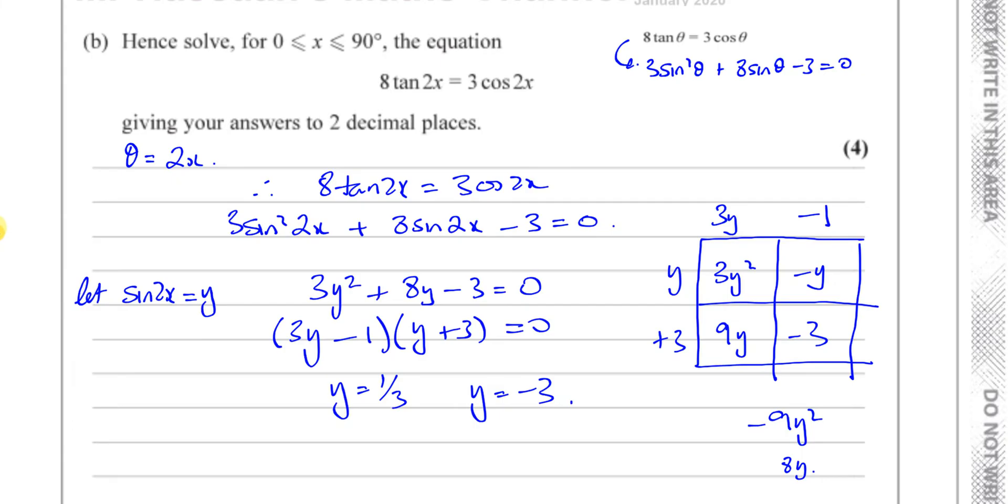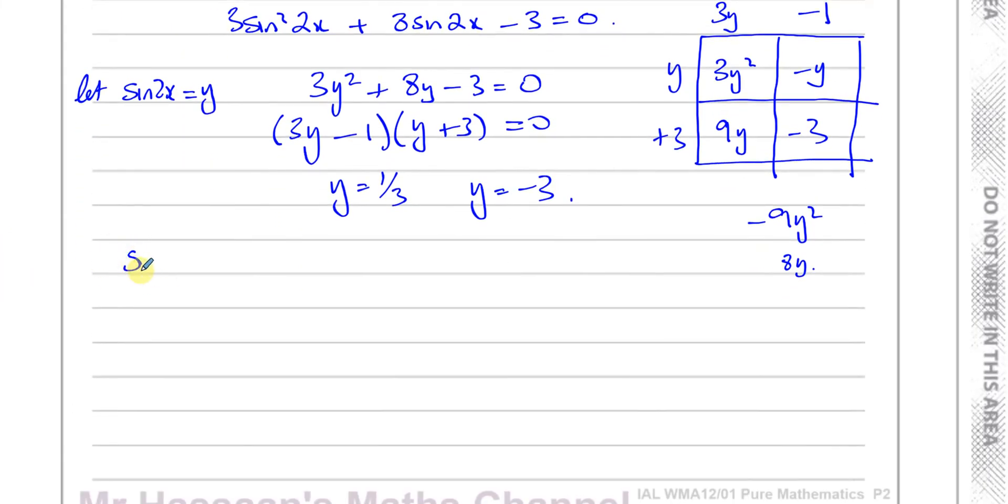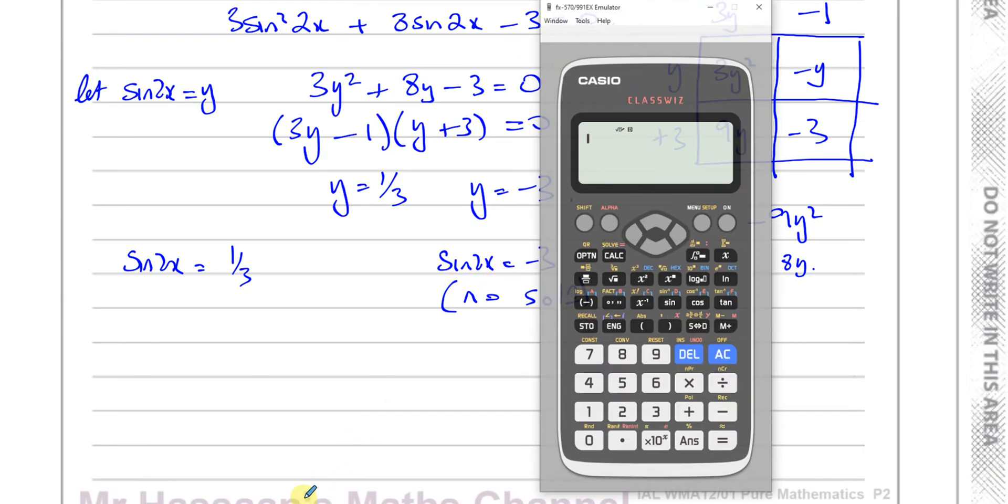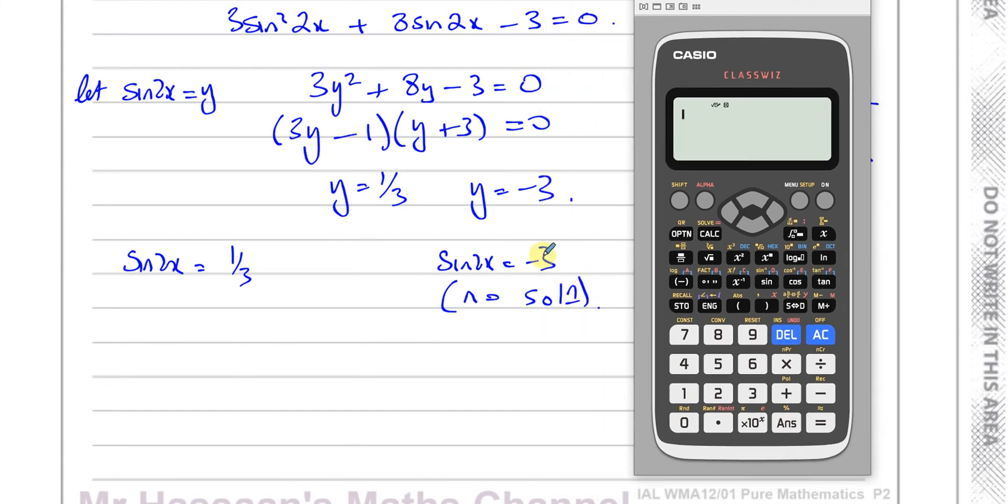So now we've said let y equals sine 2x, so we can say therefore sine 2x is equal to 1 third and the sine of 2x equals negative 3. Now this has no solution because the sine of an angle can never reach negative 3. If you put inverse sine of negative 3 in your calculator, it will give you a math error. Anytime the sine of any angle gives you a ratio which is above 1 or below minus 1, it will not give you any solution.